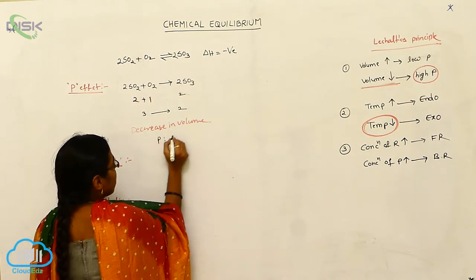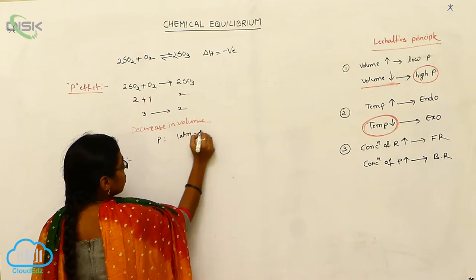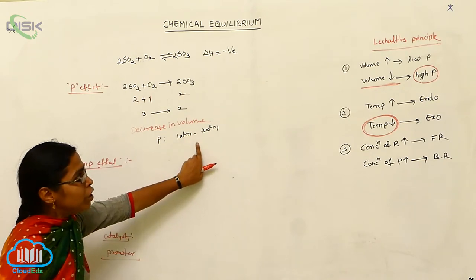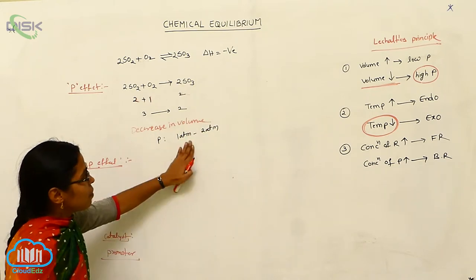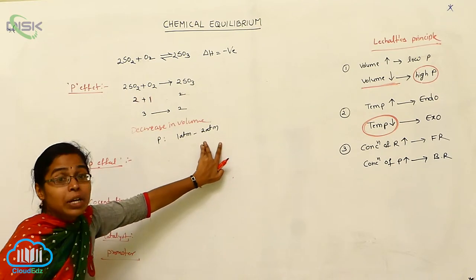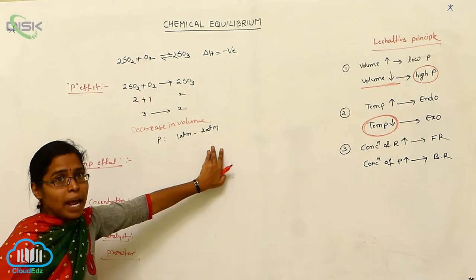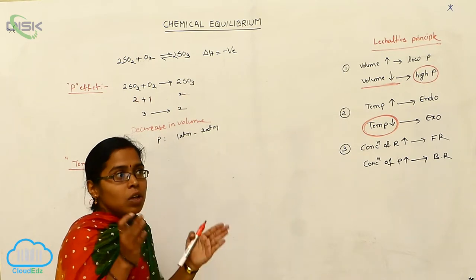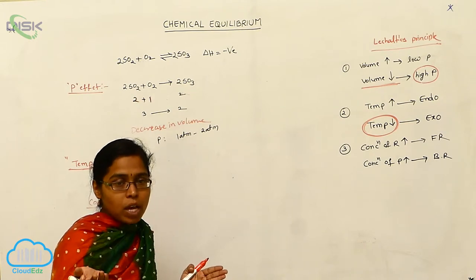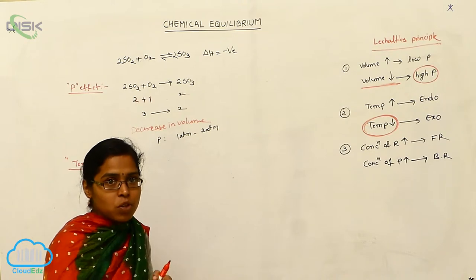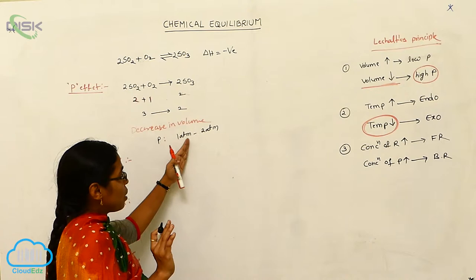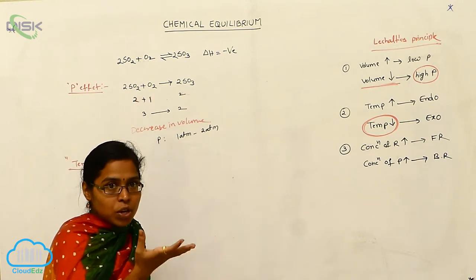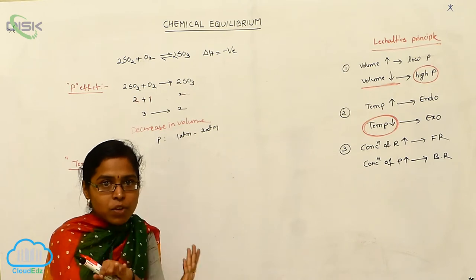However, in this process we are using only 1 atmosphere to 2 atmospheres, which is low pressure. Although according to Le Chatelier's principle we need high pressure, we cannot use it here because at high pressure the cylinders and instruments involved in this reaction may undergo corrosion. So we use the optimum pressure of 1 to 2 atmospheres.